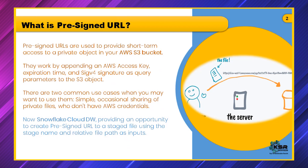He doesn't know anything technically but still needs the data. One option is to create an external account — a reader account — as discussed in previous videos. However, that requires the other person to know how to interact with Snowflake and write SQL queries. Instead, you can create a small file, land it onto your Snowflake stage, and generate a pre-signed URL for the next 15, 30 minutes, or one hour.